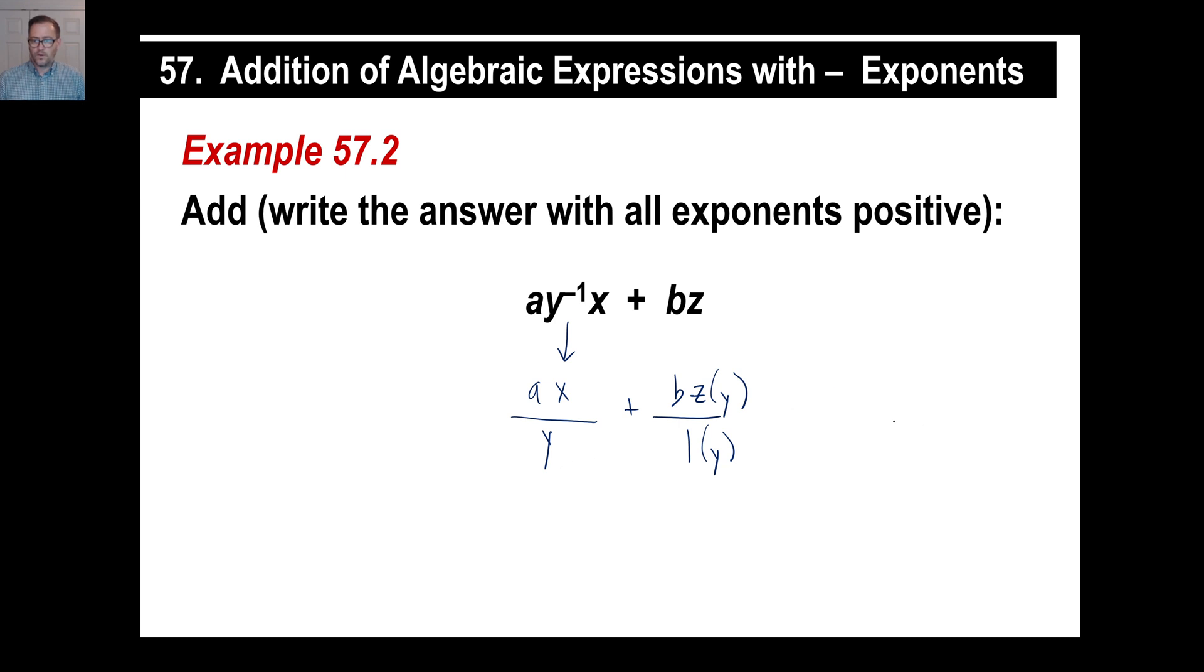So now we put those together. Both have Y as a common denominator, so we're just going to put that as one fraction. So we have AX on the top plus BZY. And we're going to add those and make it so we have one fraction because a lot of times in algebra those are easier to deal with if you're doing some other work to it. Alright. Let's try another one.